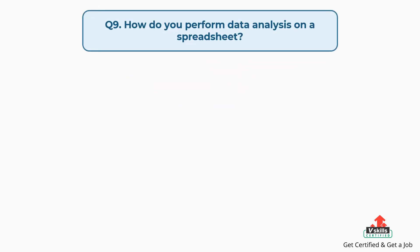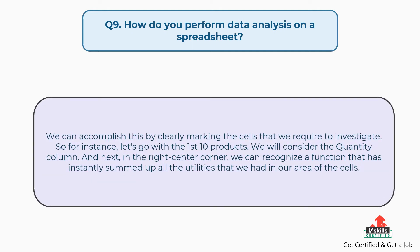Question number nine: how do you perform data analysis on a spreadsheet? The answer is, we can accomplish this by clearly marking the cells that we require to investigate. For instance, with the first 10 products, we consider the quantity column, and in the right center corner, we can recognize a function that has instantly summed up all the values in our selected area of cells.